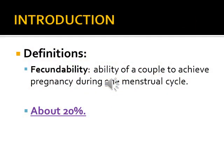Before we begin, we should know what is meant by fecundability. Fecundability is the ability of a couple to achieve pregnancy during one menstrual cycle. It is about 20 to 25 percent.